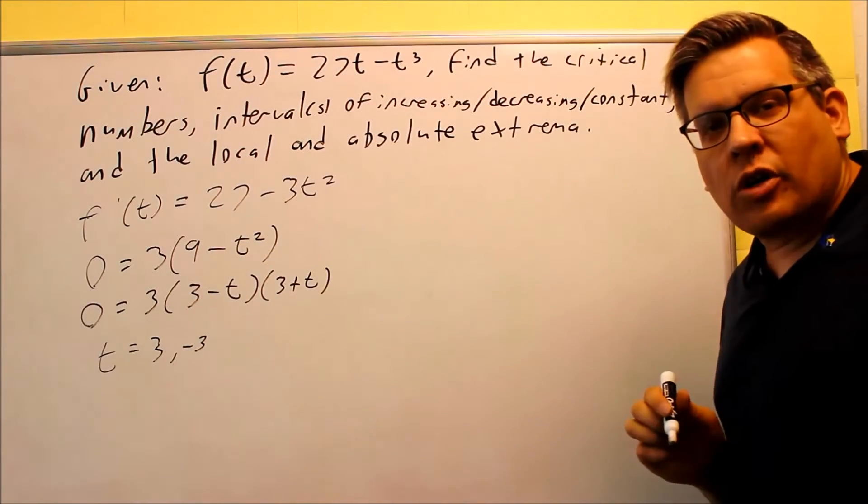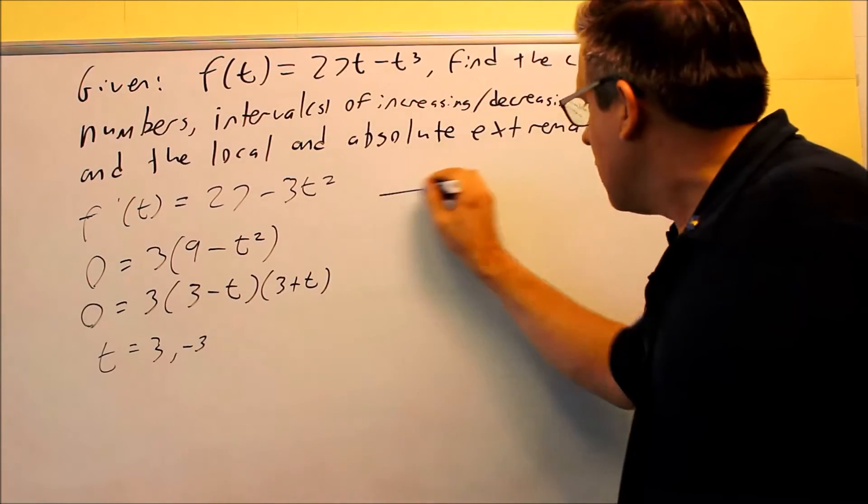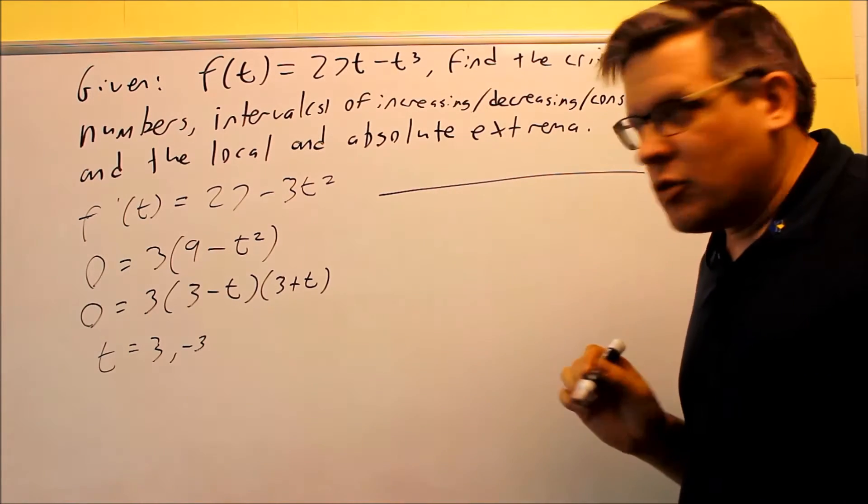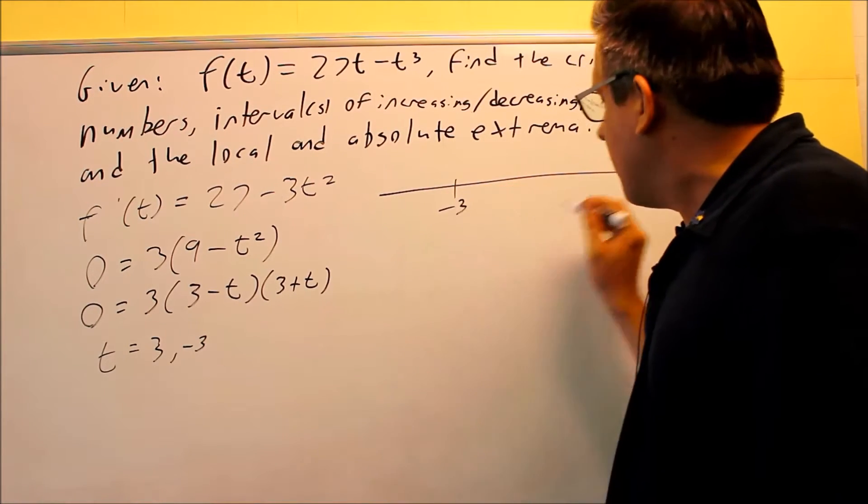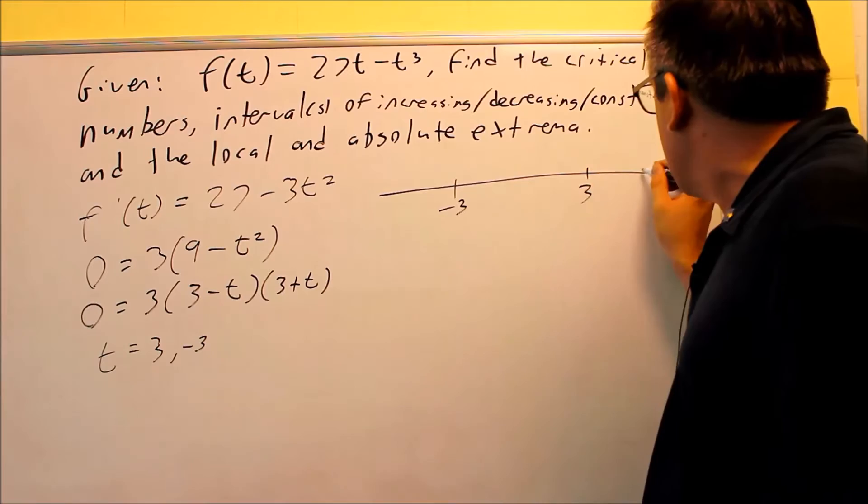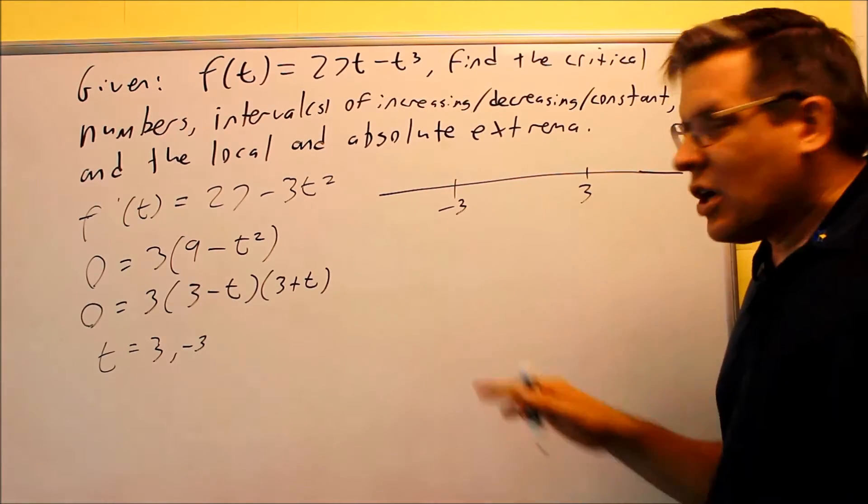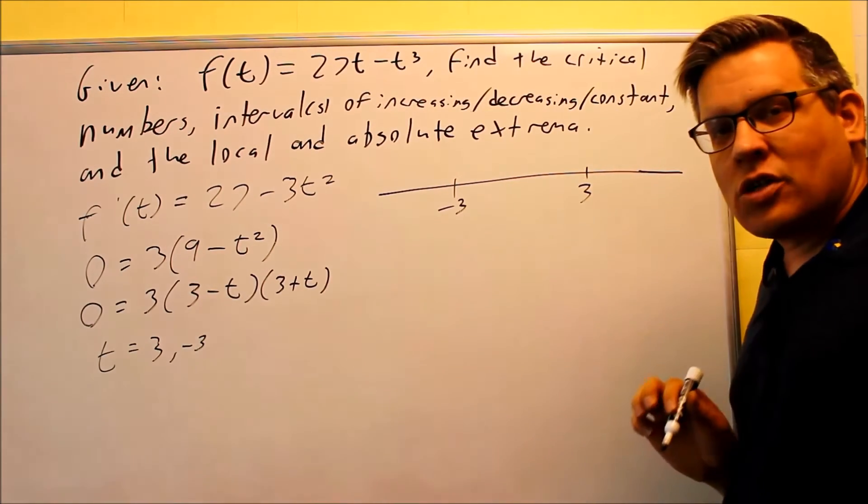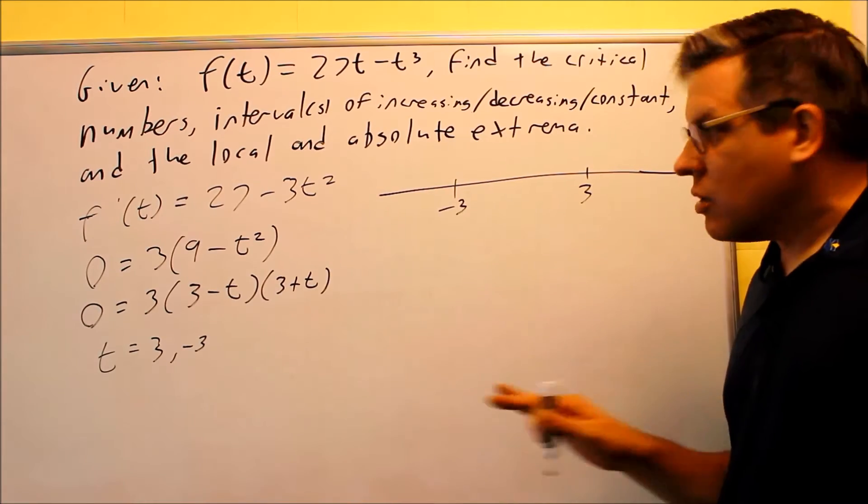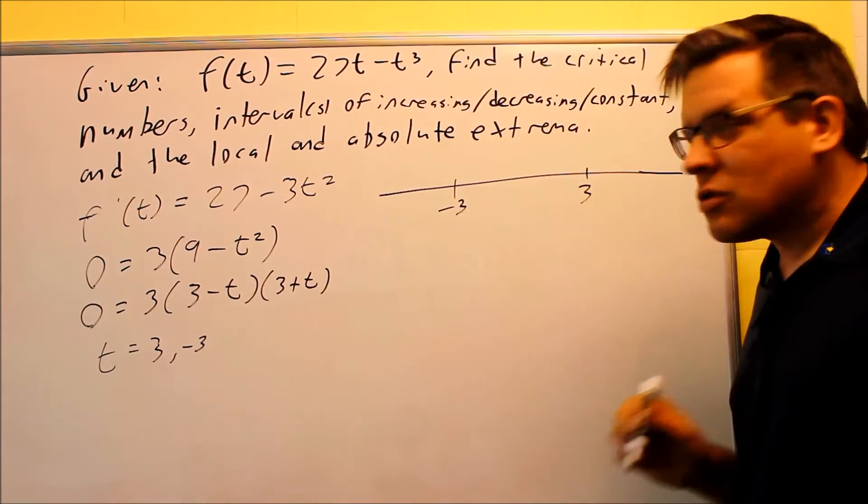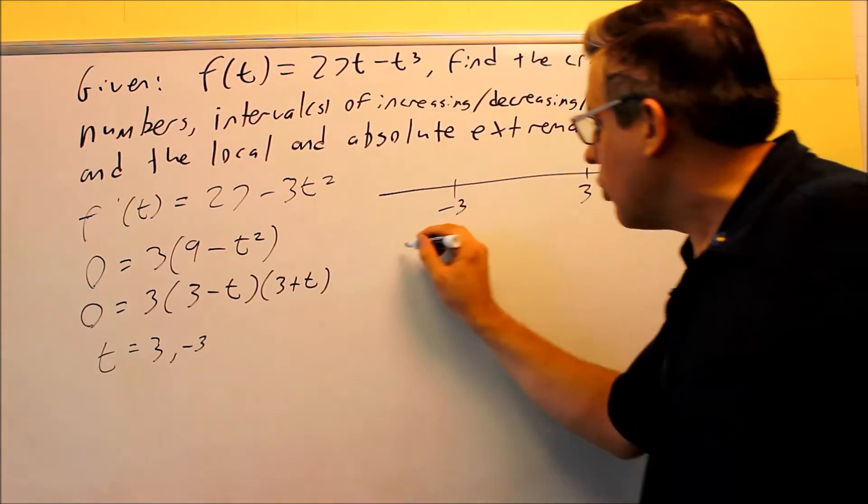These are the ones that we're going to put on our number line. And then we know what our test intervals are going to be: negative 3 and 3. We're going to test numbers in each of these regions. The number you pick doesn't matter as long as it fits in between each of these. A number less than negative 3, we'll use negative 4.